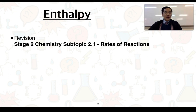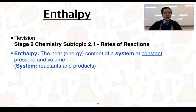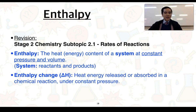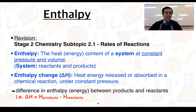As a bit of revision from stage 2 chemistry in subtopic 2.1 rates of reactions, we learned that enthalpy is the heat or the energy content of a system at constant pressure and volume. The word system essentially refers to the reactants and products. Therefore the enthalpy change is the heat energy that's released or absorbed in a chemical reaction under constant pressure — it's the difference in the enthalpy contained within the chemical bonds of our products versus our reactants. We can express it as an equation where ΔH equals the enthalpy of our products minus the enthalpy of our reactants.